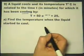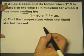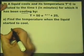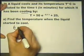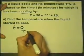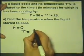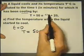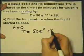Find the temperature when the liquid started to cool. Well, when the liquid started to cool, we can say that t equals 0. So if we substitute t equals 0 into there, we get 50E raised to the power of 0 plus 25.